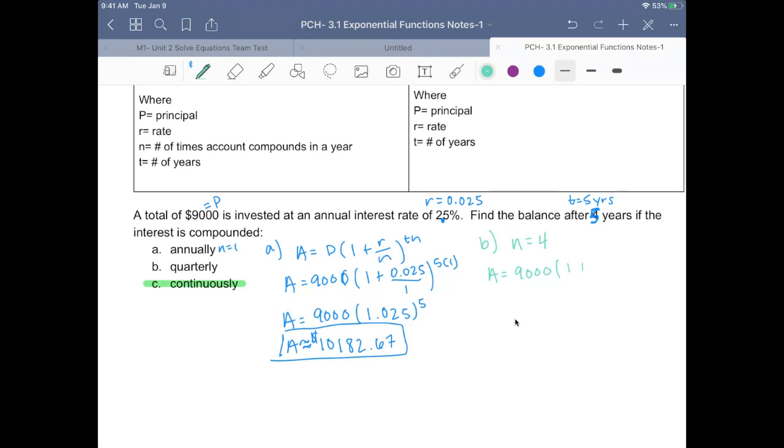times (1 plus 0.025 over 4) raised to the 5 times 4. Basically, we're compounding 20 times, so we have to raise to the power of 20.